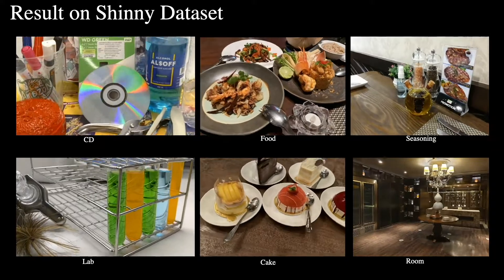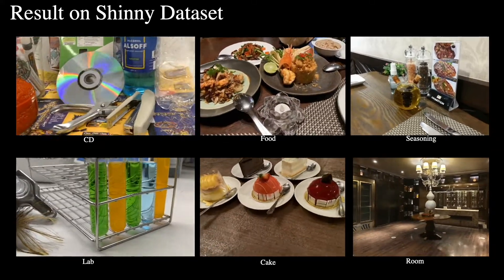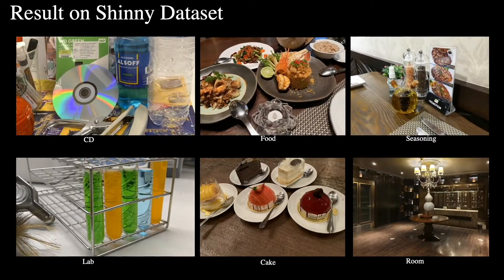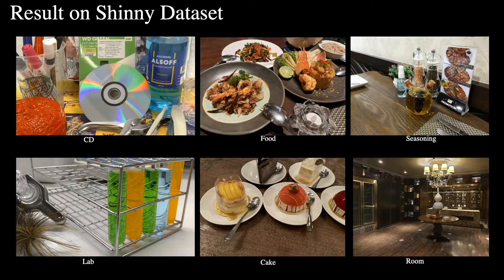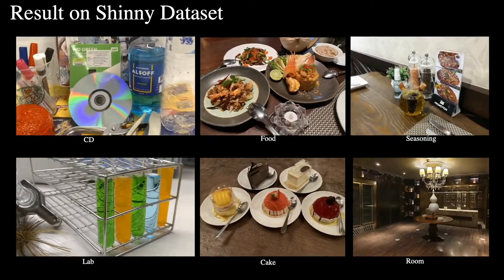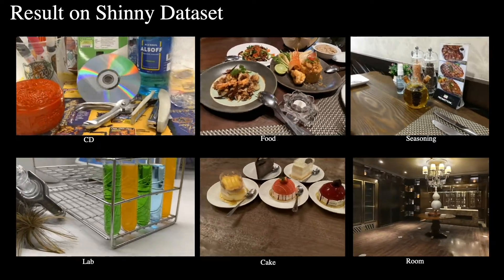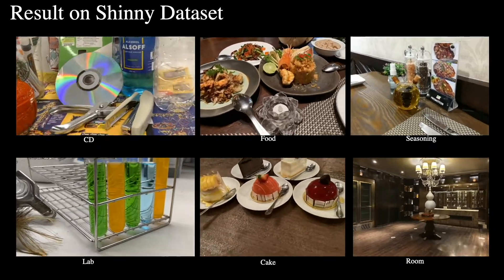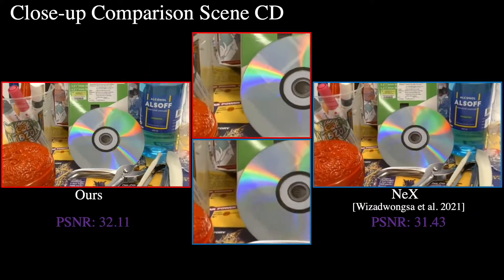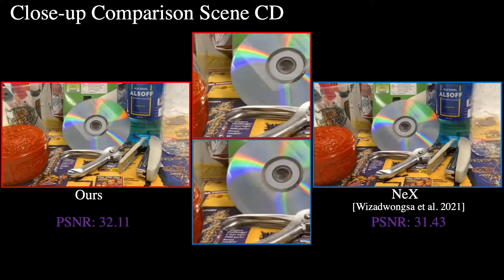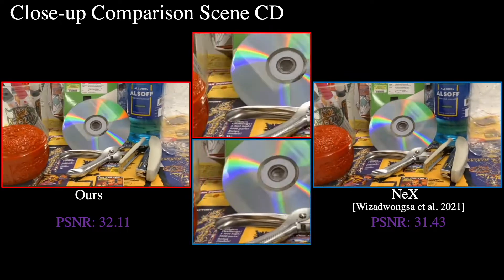Here, we demonstrate the qualitative results of our method on the Shiny dataset. This is a challenging dataset that contains complex scene geometry and various challenging view-dependent effects — for example, refraction through the test tubes, rainbow effect emitted by a CD disk, and sharp specular highlights from silverware and thick glasses. In the CD scene, our result shows more sharp and vivid detail on the rainbow, plastic cup reflections, and less noise on the liquid bottle than NeX.